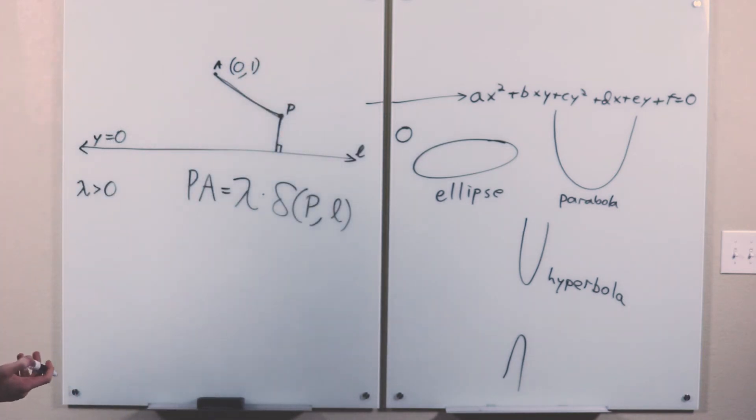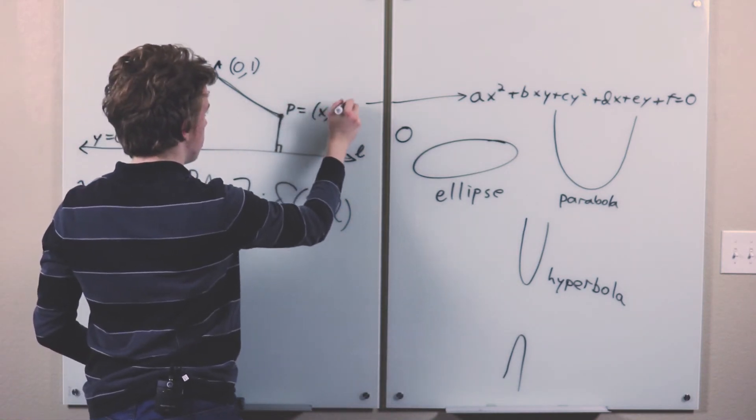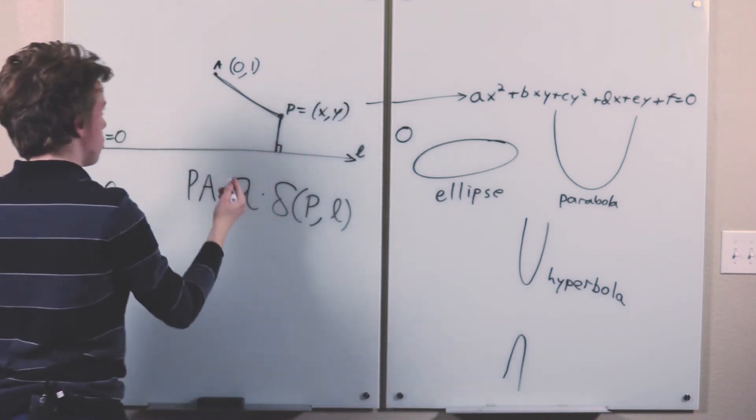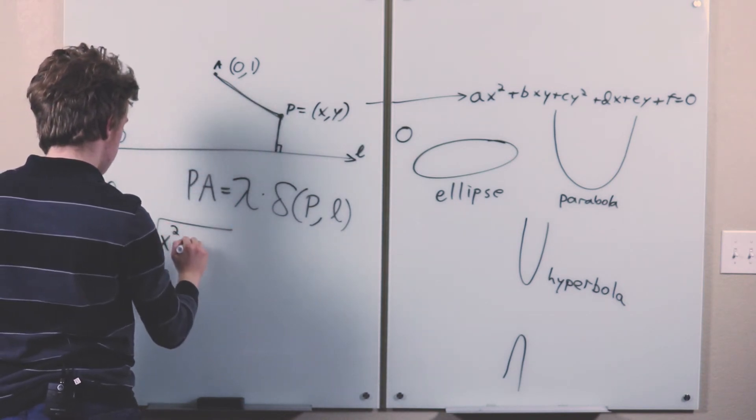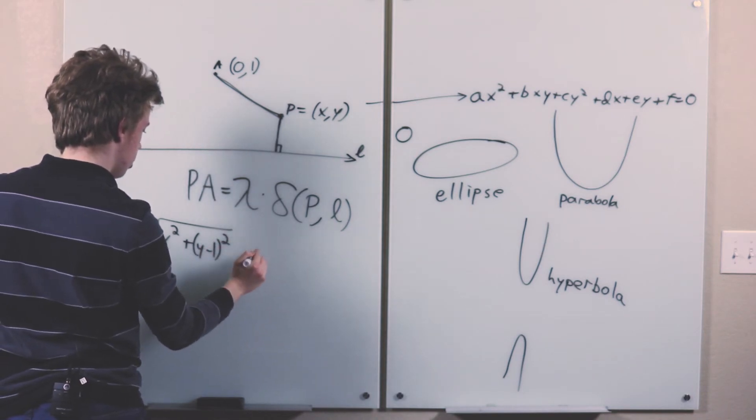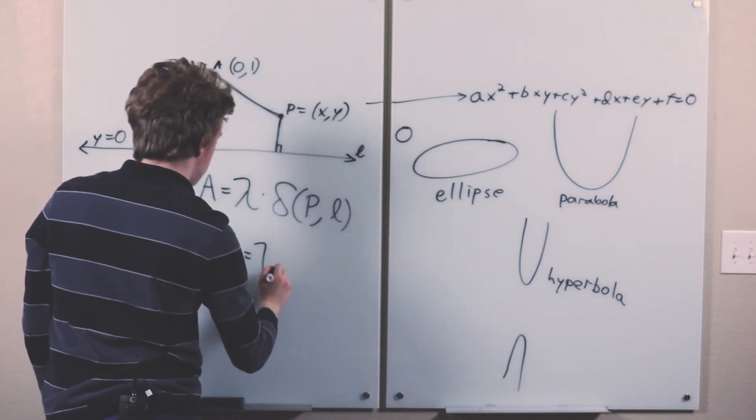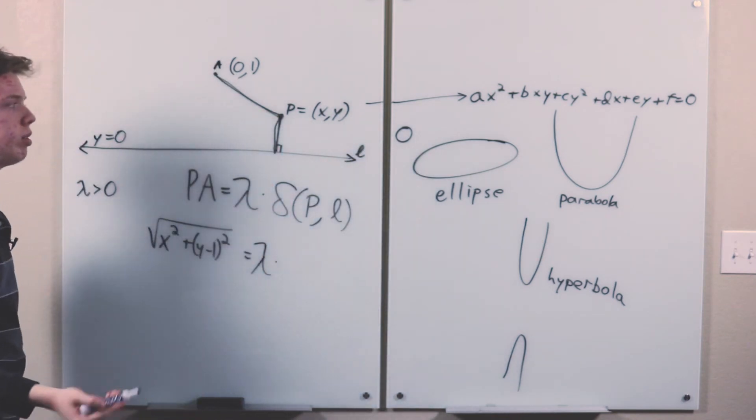So what is the set of points p that will satisfy this? x, y. Well the distance from P to A is this, by the distance formula. Now lambda is still lambda.